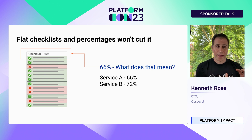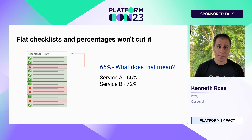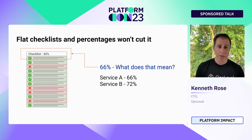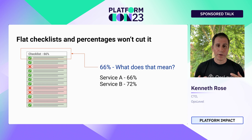A quick aside about how to model a production readiness list: most folks start with a flat checklist and use percentages. For example, 12 checks with four failing and eight passing gives 66% — but is that good or bad? If you have two services, service A at 66% and service B at 72%, which one's better? You might say service B because it's a bigger number. But what if service A actually has the highest-urgency checks fixed and service B doesn't? Service B did a lot of the nice-to-haves but doesn't have the most important ones done. There's no prioritization that comes through when you're just dealing with a flat list with percentages.